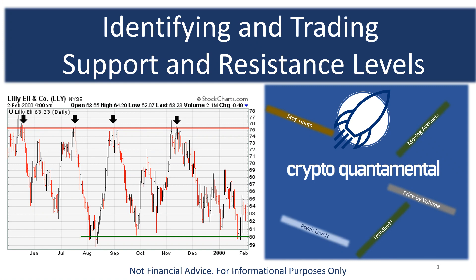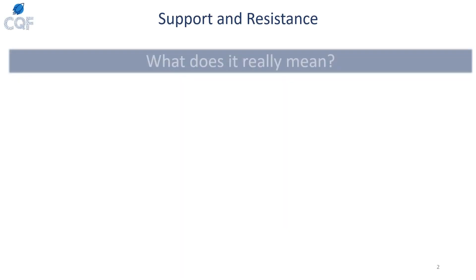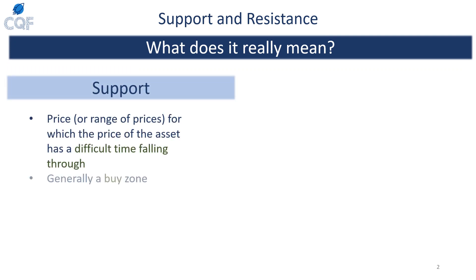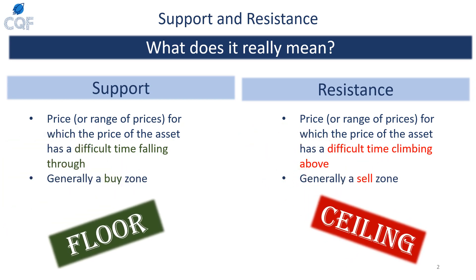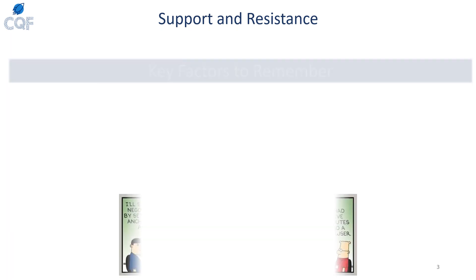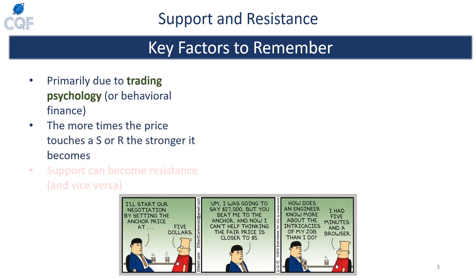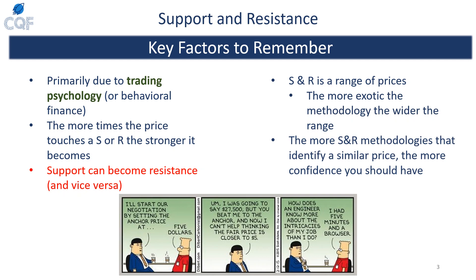Hey everybody, this is Cryptoquantamental. Today I'm going to teach you how to identify and trade support and resistance levels using multiple methodologies to add to your confidence that they will hold. Support is a price which the asset has a difficult time falling through — think of it as a price floor and a buy zone. Resistance is the opposite: a price ceiling and generally a sell zone. The whole reason support and resistance works is due to trading psychology, so keep that in mind throughout your trading.